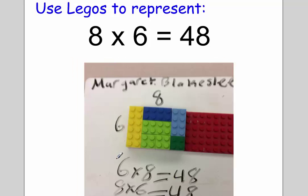Margaret looked at it the very same way and then said, I could turn my Legos any way I want, and that's still the same equation. Six times eight is the same as eight times six. That's the commutative property of multiplication. Great job, Maggie.